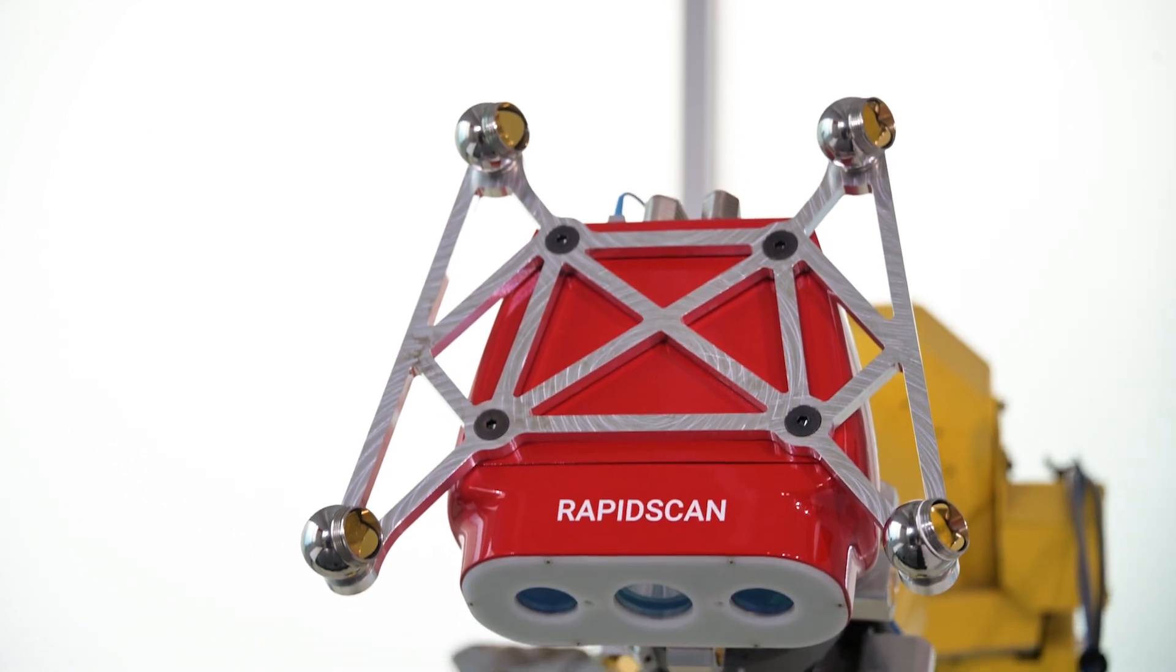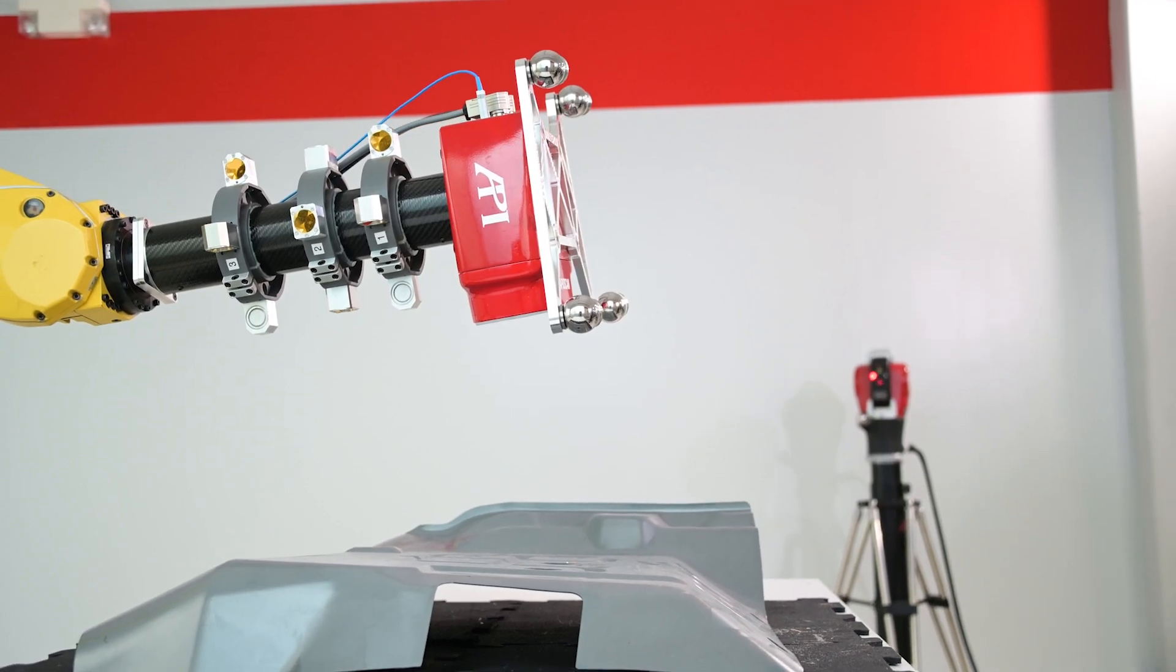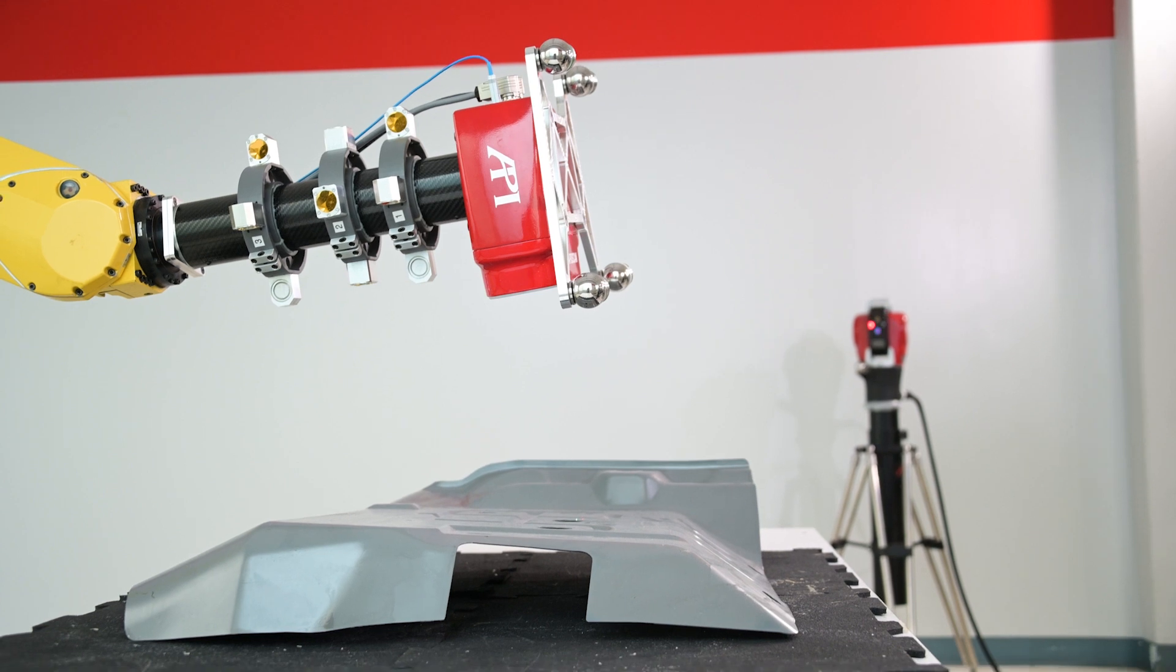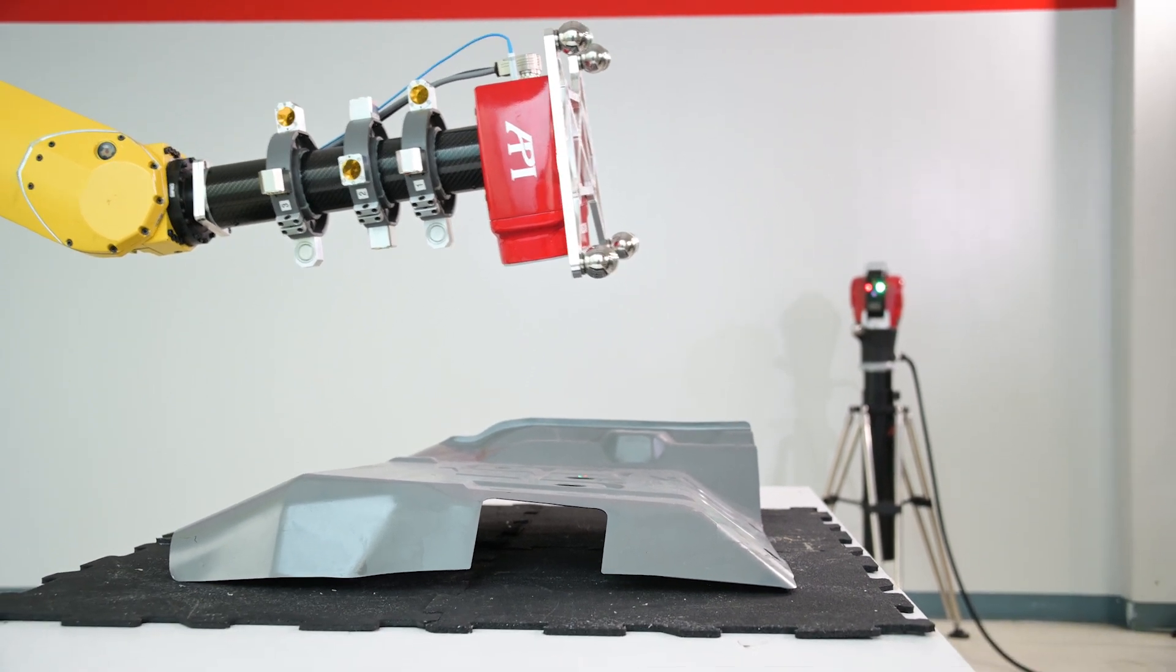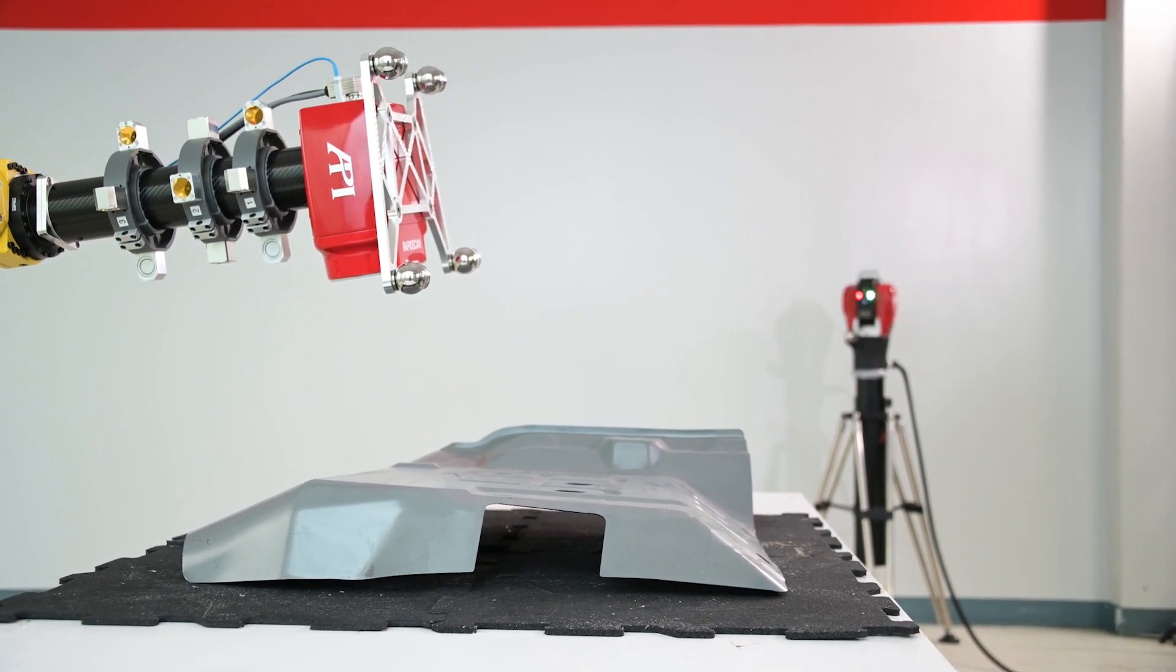The real-time 6-DOF robot tracking completely eliminates any requirement for problematic stickers used by photogrammetry robotic measuring systems and provides comparable CMM accuracy.